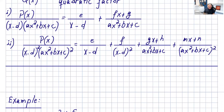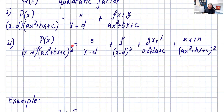If you have p of x over x minus t squared times ax squared plus bx plus c squared, you write the decomposition as: e over x minus t, plus f over x minus t squared, plus gx plus h over ax squared plus bx plus c, plus mx plus n over ax squared plus bx plus c squared. Don't forget the squared on that last term.